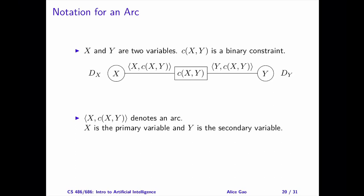Before I introduce the arc consistency definition, let me introduce some notation for defining an arc. Let x and y be two variables. Let c be a binary constraint. Depending on the meaning of the constraint, c(x,y) and c(y,x) may or may not represent the same constraint. For example, if the constraint is x plus y equals 5, then c(x,y) and c(y,x) have the same meaning. If the constraint is x is divisible by y, then c(x,y) and c(y,x) have different meanings.